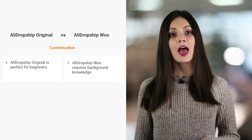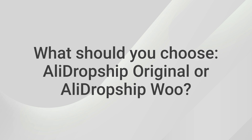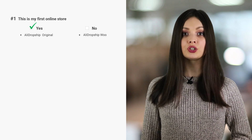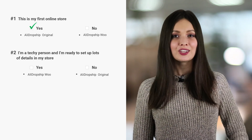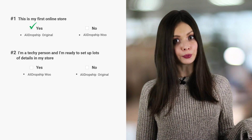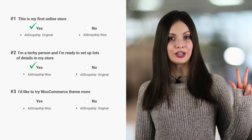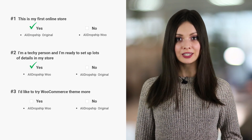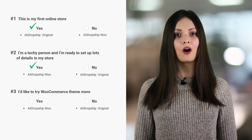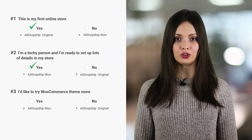That brings us to the main point: how to decide which AliDropship plugin version is best for you? Answer 3 questions. Question 1: Is it your first dropshipping store? If it is, choose AliDropship Original. Question 2: Do you have the tech skills to build a WooCommerce store and set up the details yourself? Are you a programmer, developer, or IT person who could handle that? Consider AliDropship Woo. Question 3: How do you want your store to look? Take a look at the themes – I will leave the link to the page with all available themes in the description. Your store's appearance depends on which version you choose.